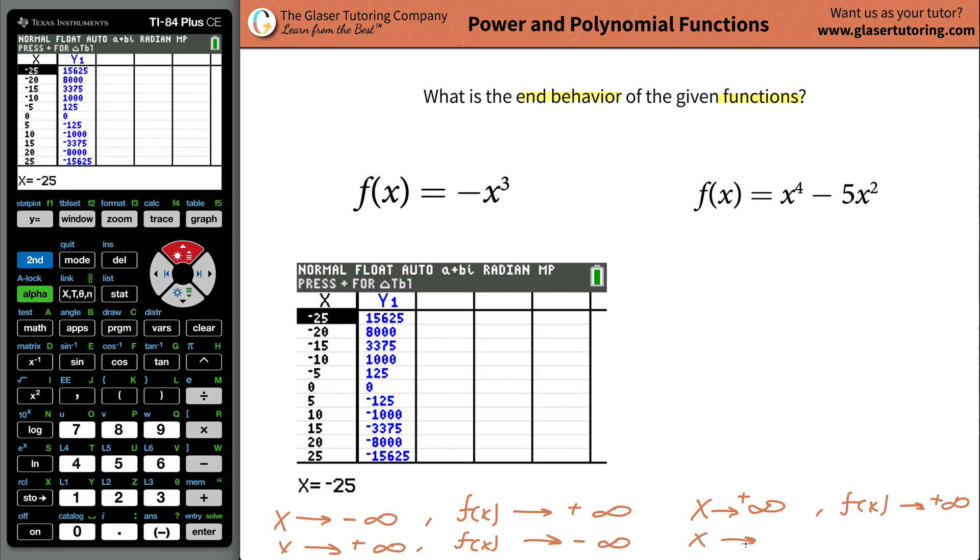Now, what happens as x goes to negative infinity? Well, same thing, this term is going to dominate, but if you raise to the fourth power a negative term, it'd be a negative times a negative times a negative times a negative, and that becomes a positive. So it's actually going to do the same thing, the x to the fourth term's going to dominate, but it's going in the positive direction, so this should become positive infinity over time, the y value.